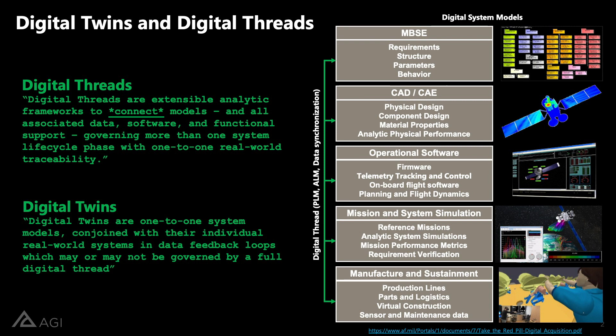There are a lot of different types of models, and it's important to understand these. The first type is a descriptive model — Model Based Systems Engineering (MBSE) models that capture requirements, define architecture and structure, have parameters that define that, and capture the behavior of how the system is supposed to respond. There are also physical models or CAD models representing the shape of the physical thing to be built, supported by computer-aided engineering (CAE) — stress, strain, aerodynamics, ray tracing, and other physics models.